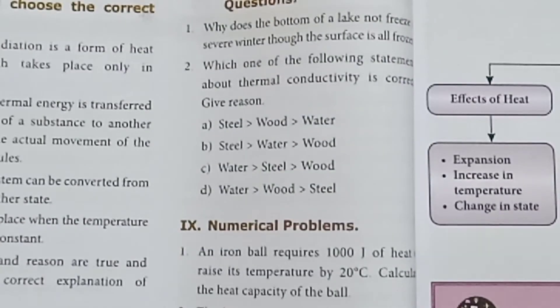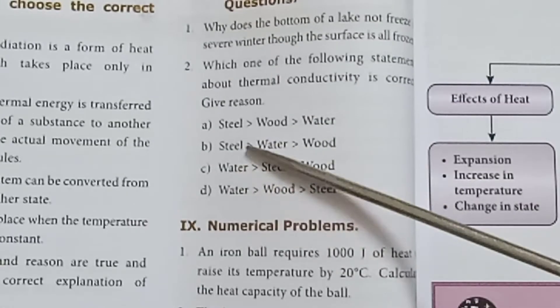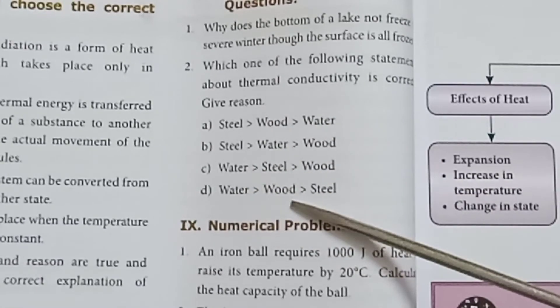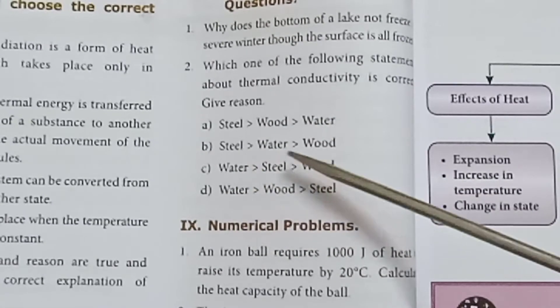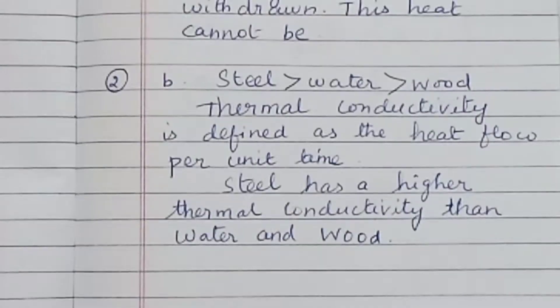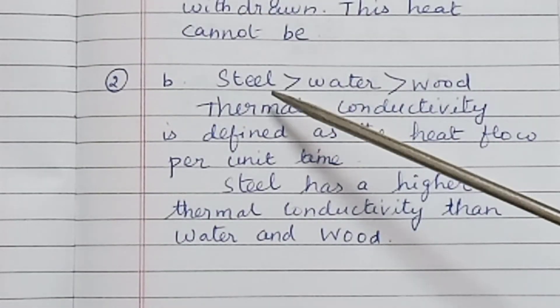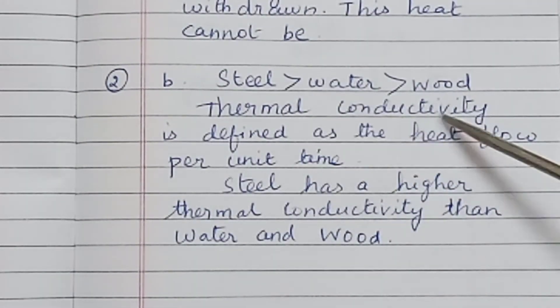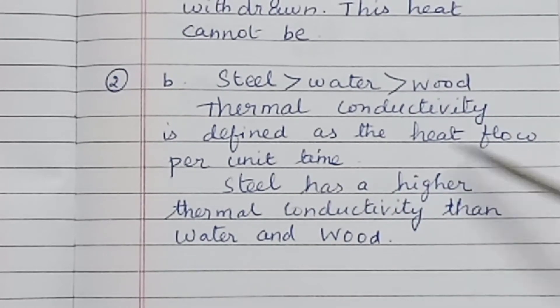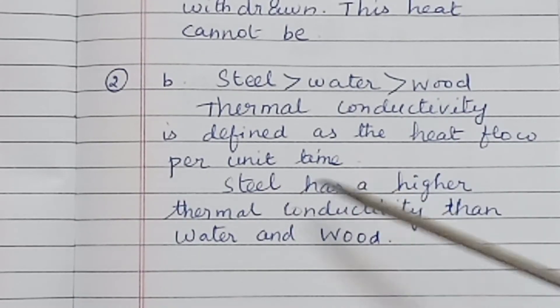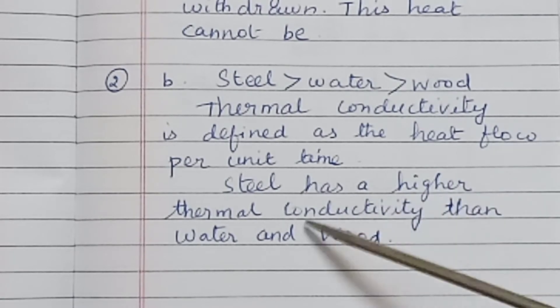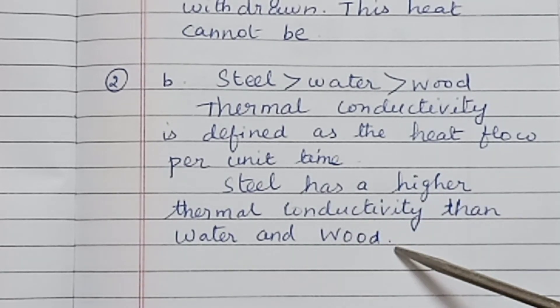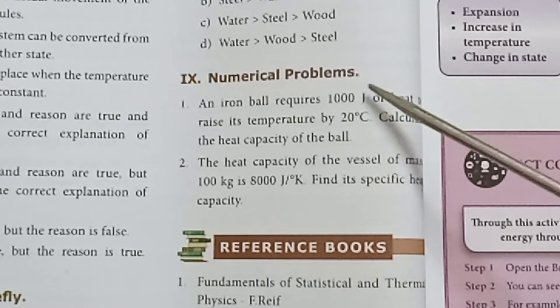Second question: Which one of the following statements about thermal conductivity is correct? Give reason. The correct answer is B: Steel > Water > Wood. Thermal conductivity is defined as the heat flow per unit chain. Steel has a higher thermal conductivity than water and wood.